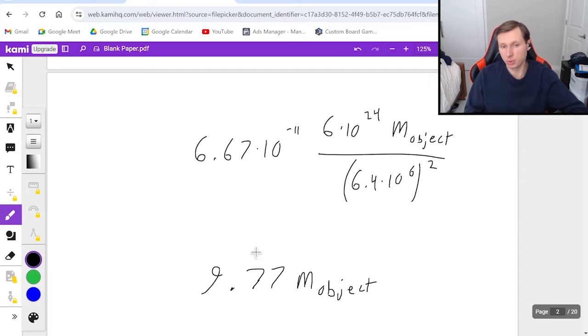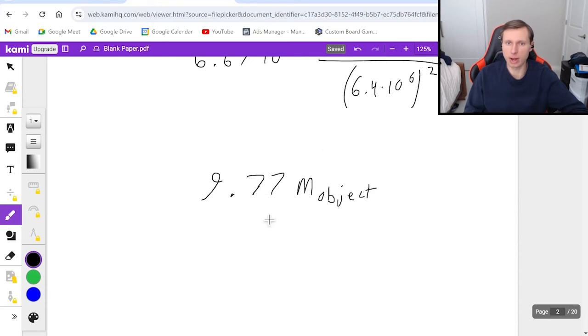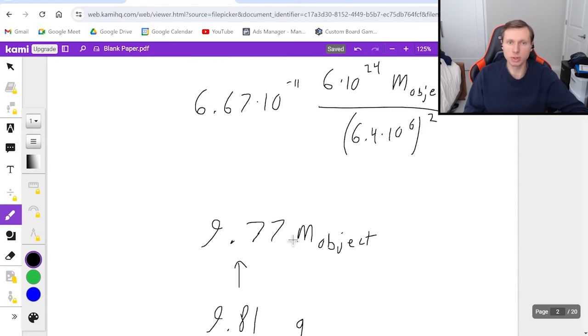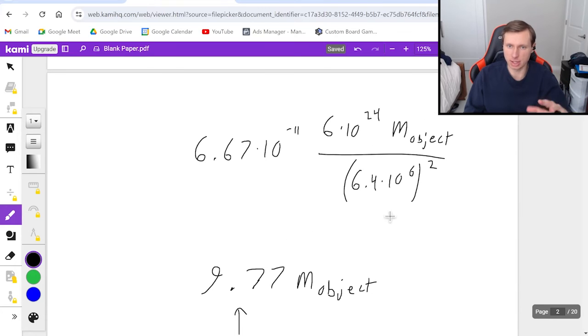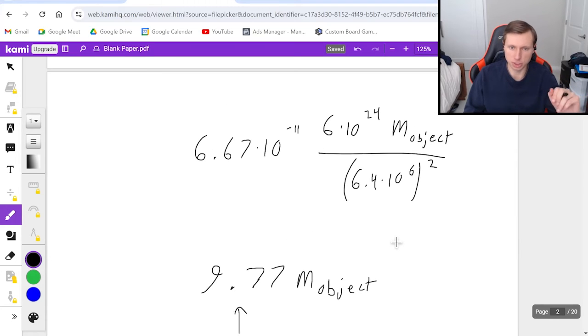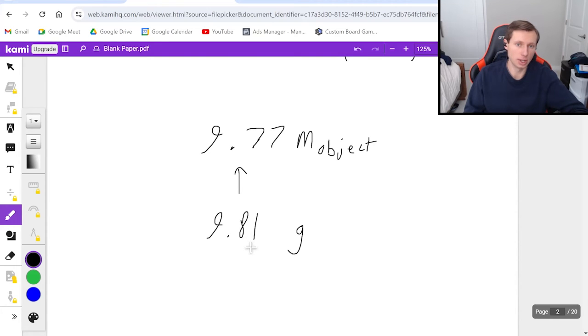And so what you need to realize is that, I mean, there's probably a rounding error here, but 9.77 is very close to 9.81, which is little g. In other words, when you plug in the actual mass of the earth and the actual radius without any rounding issues, you should get 9.81.